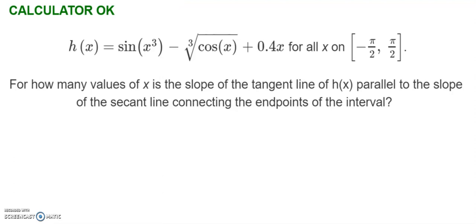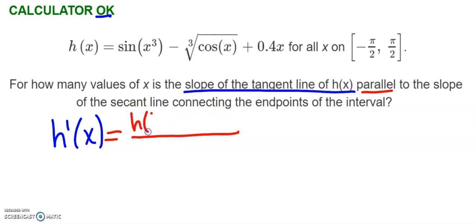All right, this last question is calculator okay. We're definitely going to need our calculator. It asks: for how many values of x is the slope of the tangent line of h(x)—so slope of the tangent line is h'—parallel to the slope of the secant line connecting the endpoints of the interval? Things that have parallel slopes have equal slopes. So h(π/2) minus h(-π/2) all over π/2 minus (-π/2).